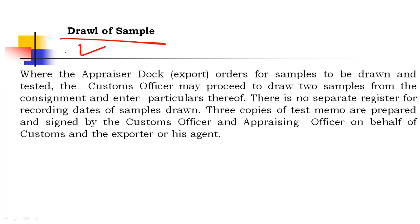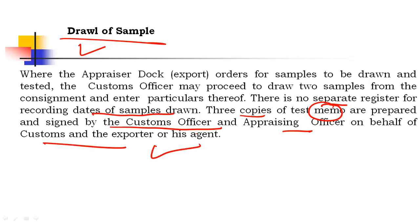Draw of samples: where the appraiser or dock officer orders for samples to be drawn and tested, the customs officer may proceed to draw two samples from the consignment and enter the particulars. There is no separate register for recording dates of samples drawn. Three copies of the test memo are prepared and signed by the customs officers and appraising officers on behalf of customs and the exporter or agent.